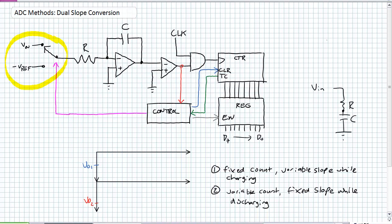Over here on the left-hand side, it's just a simple switch. What controls the switch? Well, obviously the control unit — it's telling it to switch to the V-in. That's my analog input voltage which I'm going to sample and somehow generate a digital output. What is this switch switching back and forth between? Well, if there's an analog input voltage on one side, there is a negative reference voltage on the other side. It has to be negative for this thing to work.